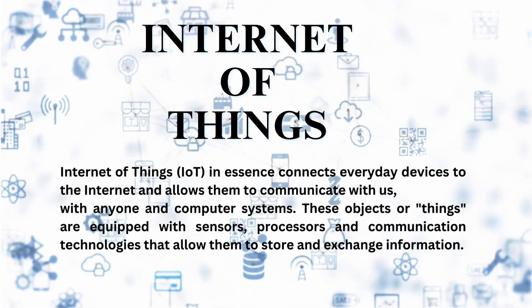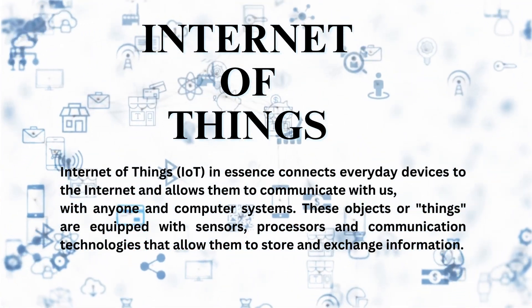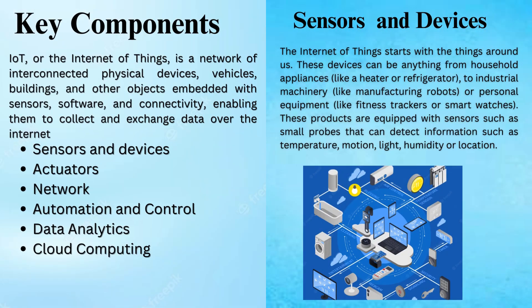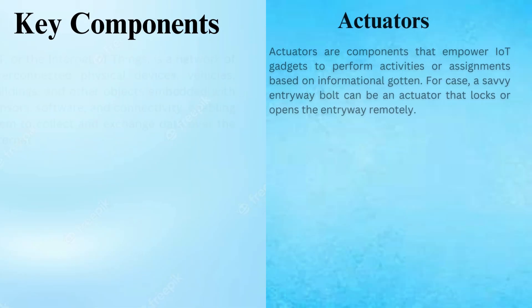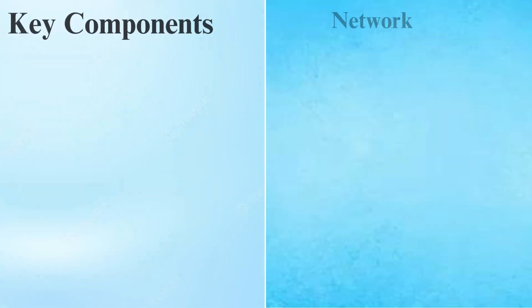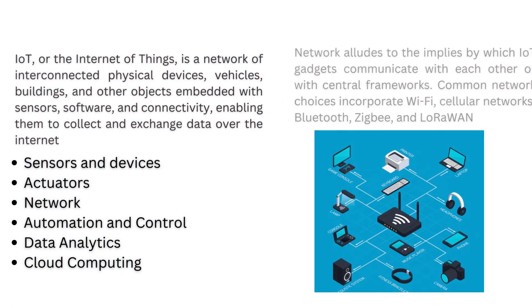They're equipped with sensors and processors that help them to collect and share data. Key components of IoT are sensors and devices — these sensors are constantly collecting data — and actuators, that empower IoT gadgets to perform activities based on information gotten. Network, by which IoT gadgets communicate with each other.